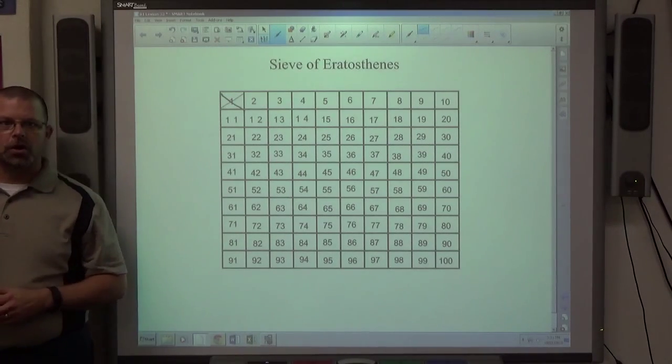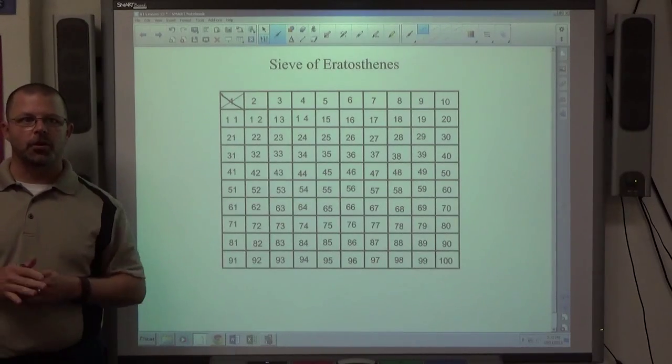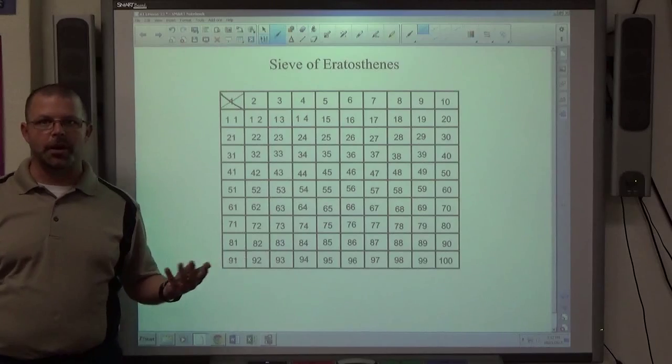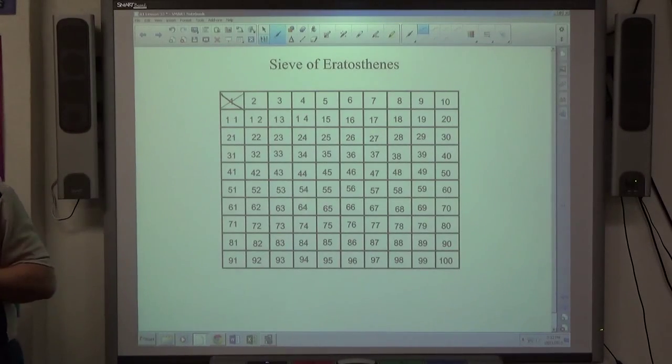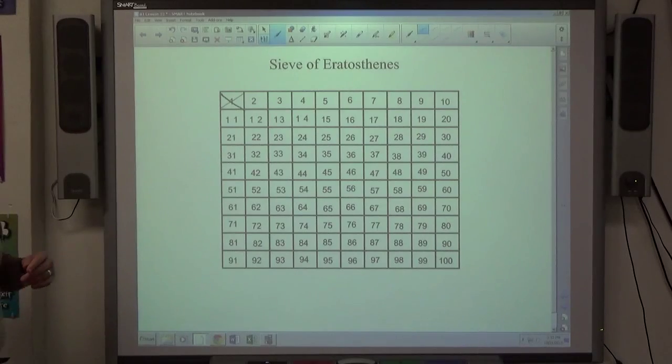A prime number is a number 2 or larger, whose only factors are itself and 1. So 2 times 1 is 2, that's the only way to make 2. 3 times 1 is 3, that's the only way to make 3. 17 times 1 is 17, that's the only way to make 17. So those are prime numbers. But they have to be 2 or bigger.